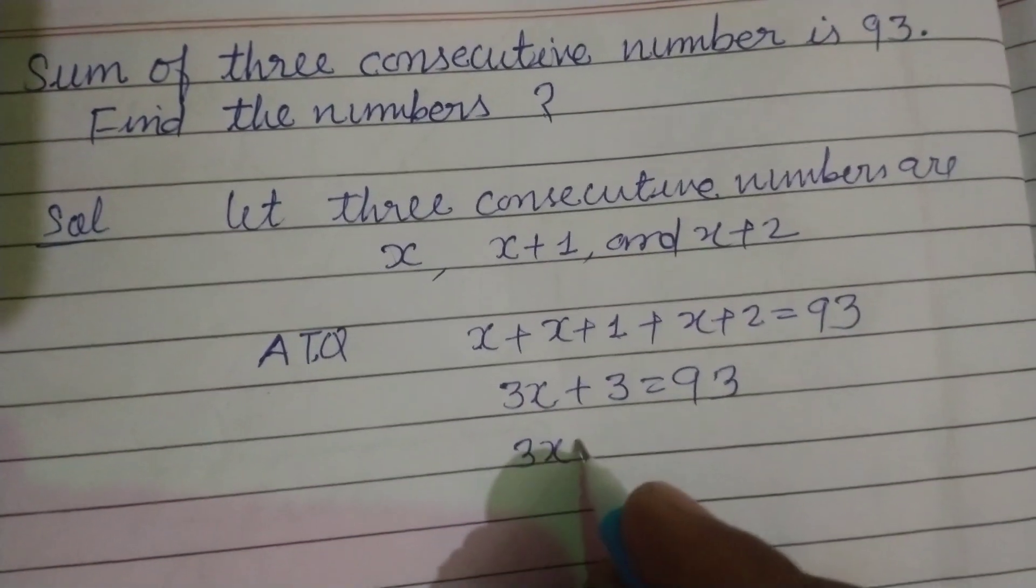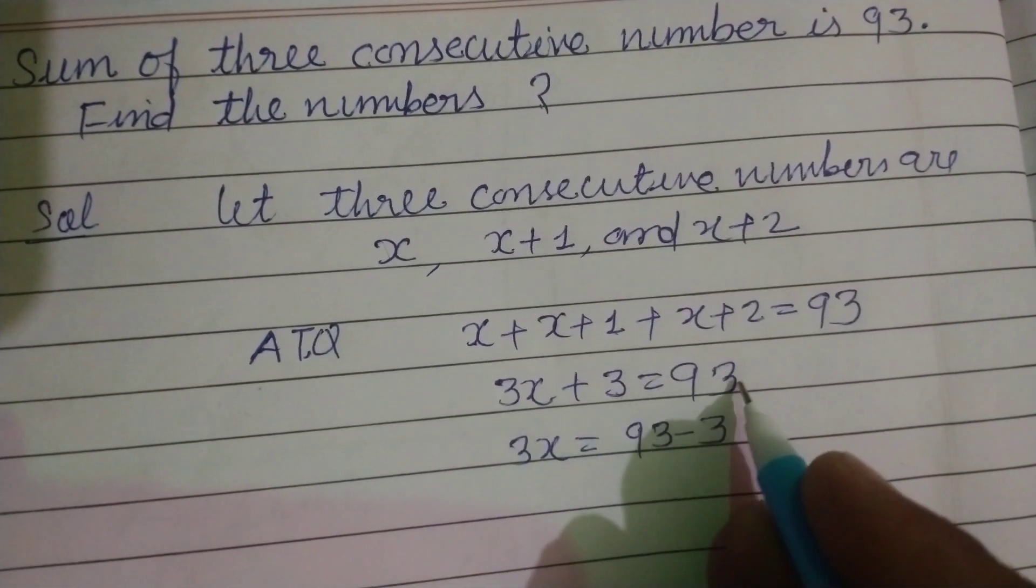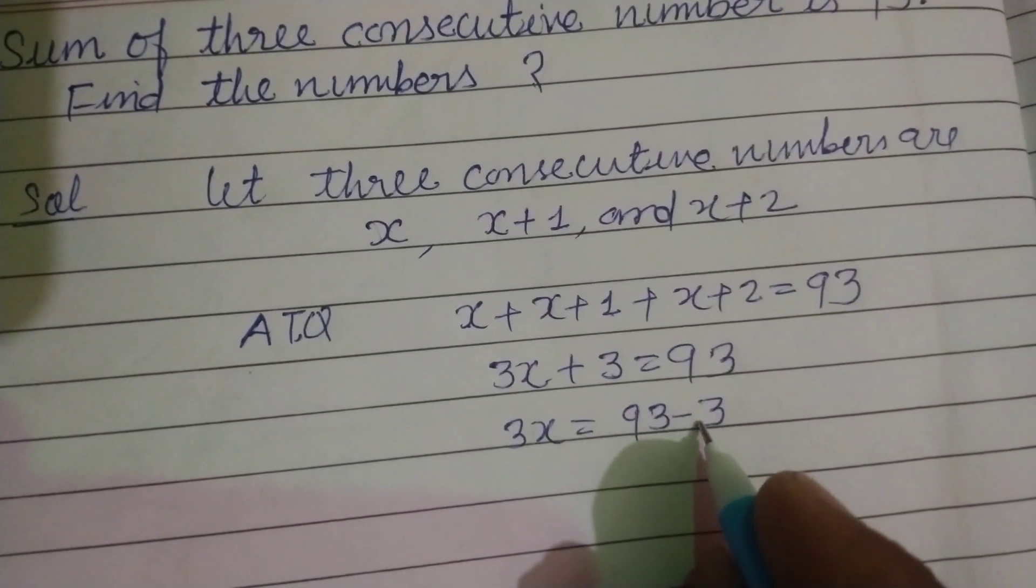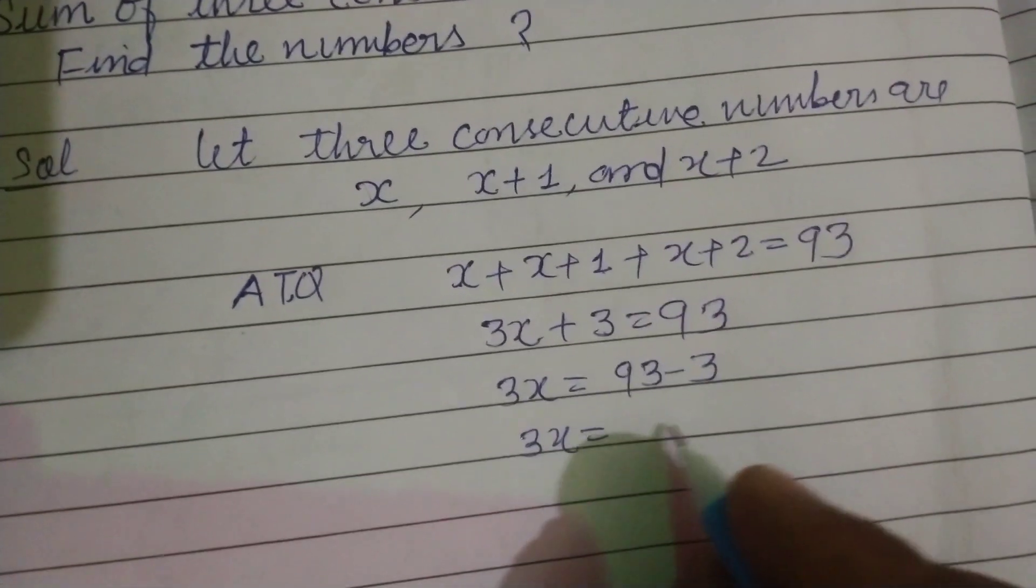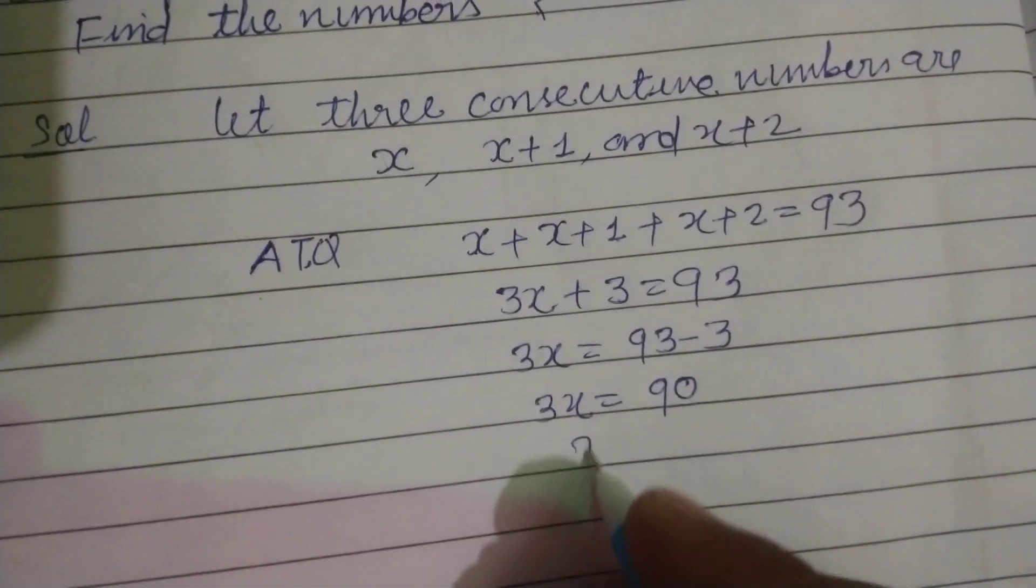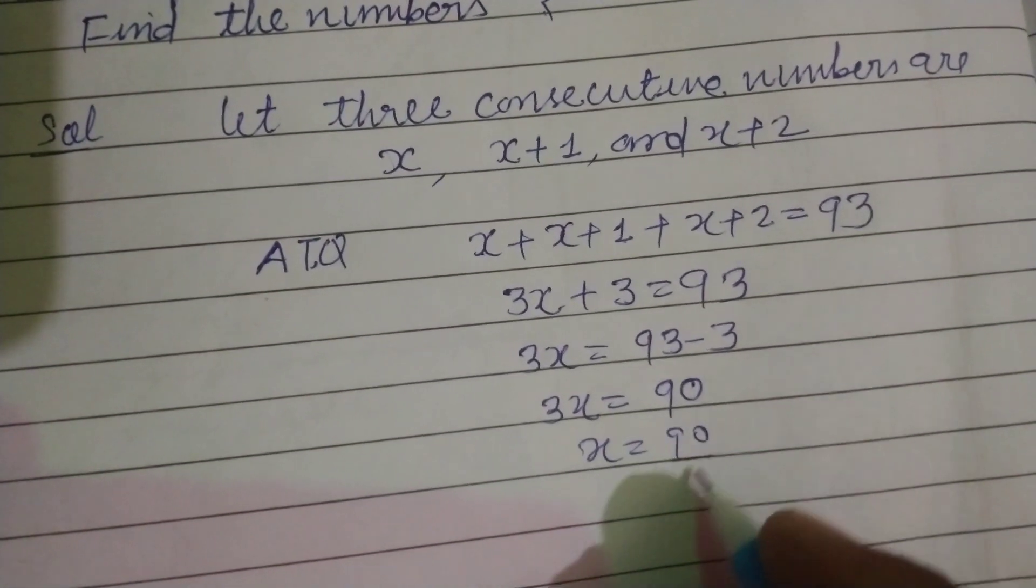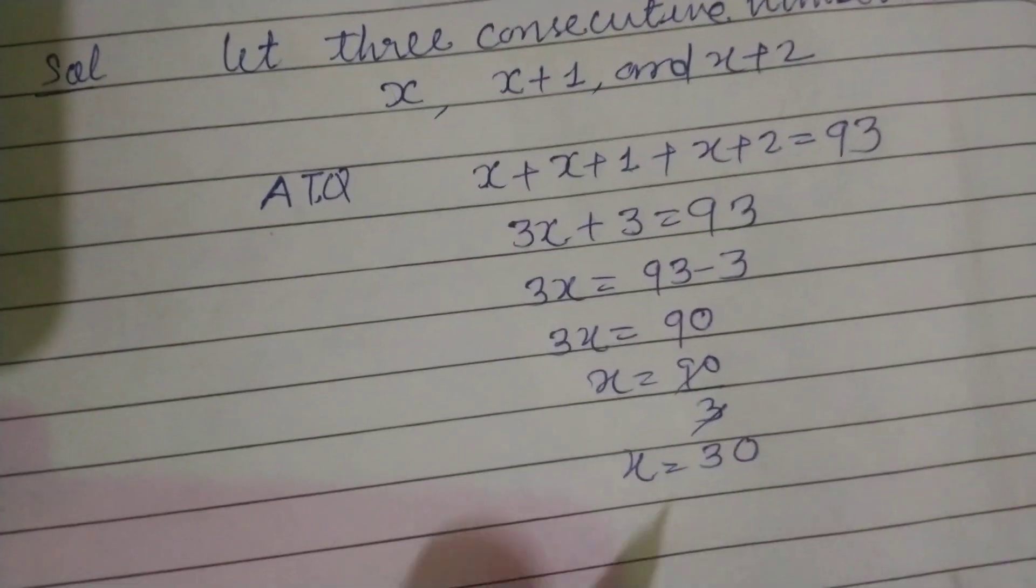So 3x equals 93 minus 3. We bring 3 to the other side and it becomes negative. So 3x equals 90, and x equals 90 divided by 3. Three threes are nine, which means 30.